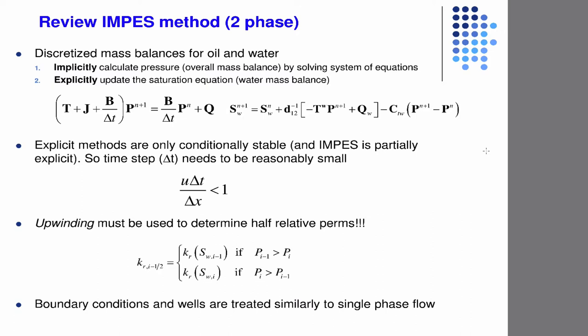So last time we met in class, when I was here, we derived all the equations for two-phase flow — we put it into a form where we had one overall mass balance equation and one saturation equation. You could use either oil or water, and you solve those in a coupled manner. When we moved on to discretizing, we solve the pressure equation — the linear equation for pressure — implicitly, and we update the saturations explicitly.